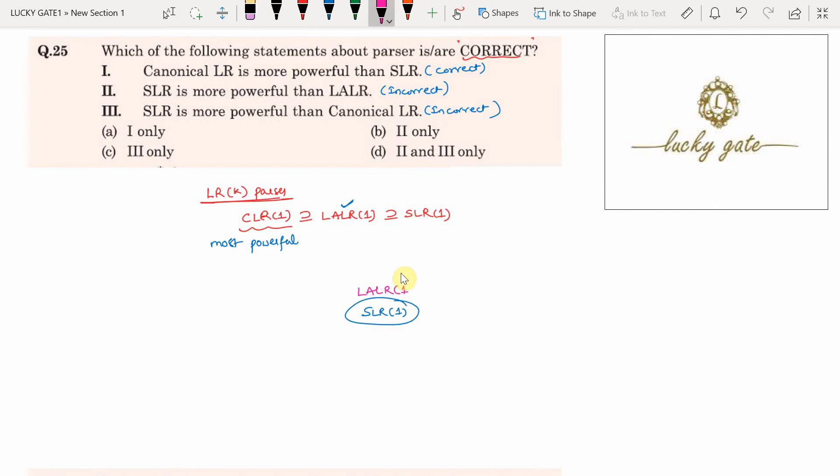It means every SLR of 1 is definitely LALR of 1, but every LALR of 1 need not be SLR of 1. And every LALR of 1 is definitely CLR of 1, because LALR of 1 is a subset of CLR of 1, but every CLR of 1 need not be LALR of 1.